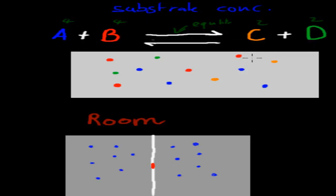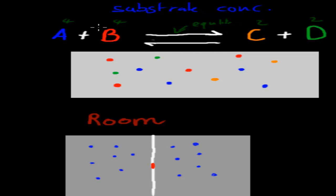This is our actual equilibrium, and it's important to realize that the actual numbers don't have to be constant — I mean they have to be constant, but they don't have to be equal. So in this case we've got more A's and B's than C's and D's, but overall that ratio stays the same. So you're always going to have more A's and B's than C's and D's if we're in equilibrium.